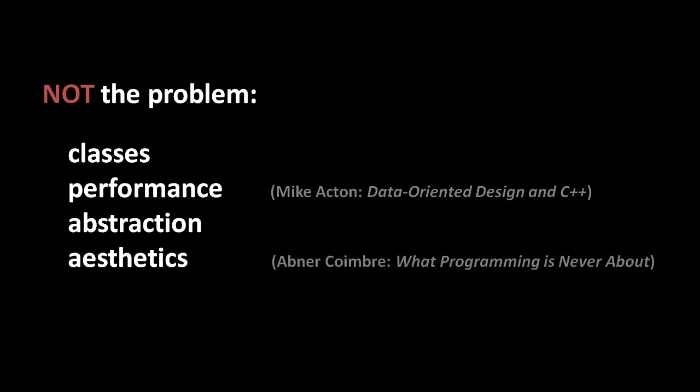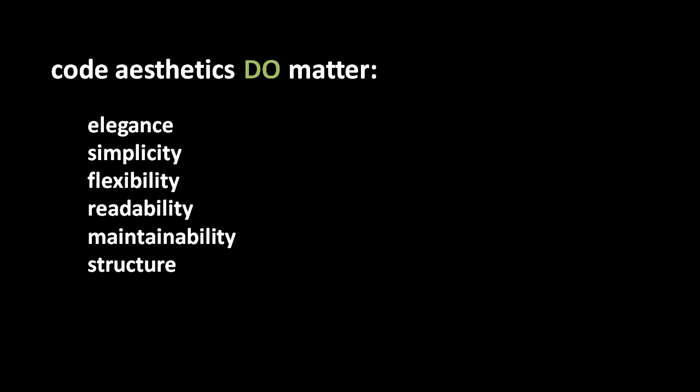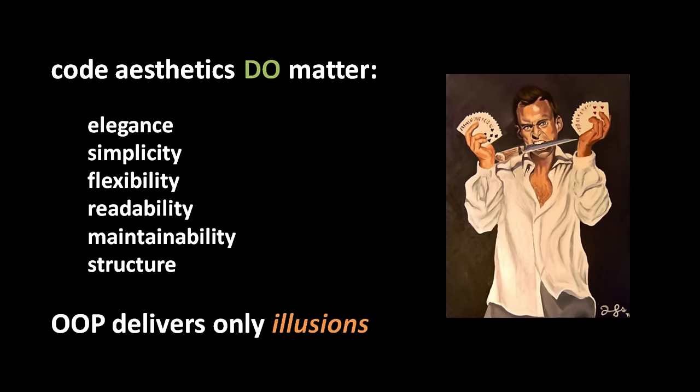Another interesting talk is by Abner Coimbra called 'What Programming is Never About,' which argues programming is never about code prettiness or aesthetics. I think though he misstates his case — elegance, simplicity, flexibility, readability, maintainability, structure: he would actually admit these things do matter. The more accurate spin is that these surface-level virtues are good and important, but object-oriented programming fails to deliver them. In fact it provides just the illusion of these things — it's sold on the basis of supposedly providing simplicity and elegance, but actually makes things worse.